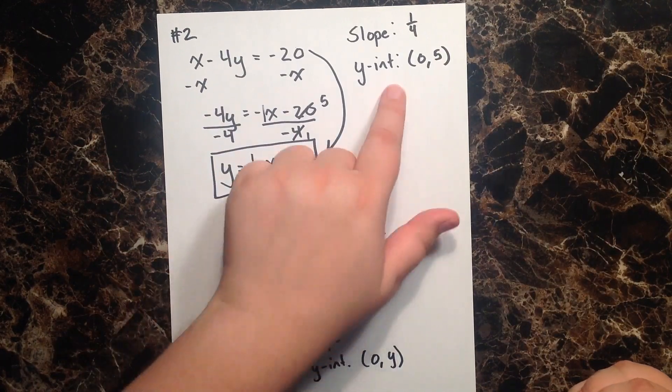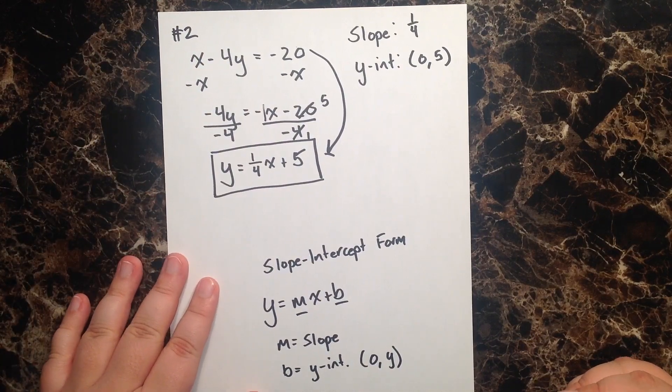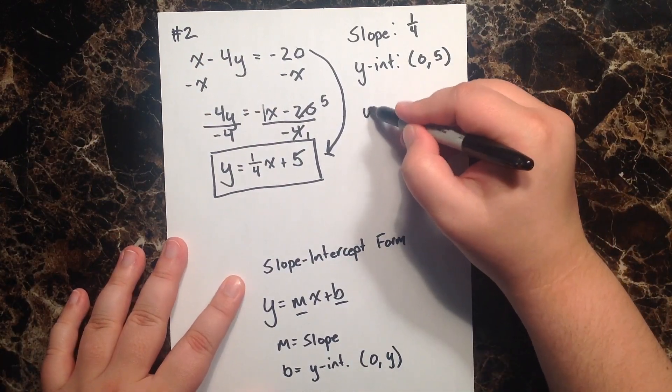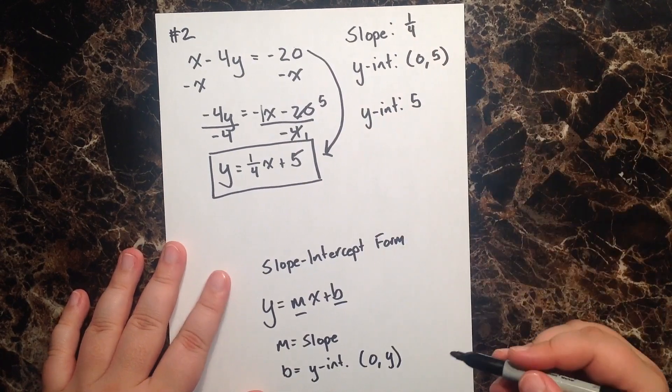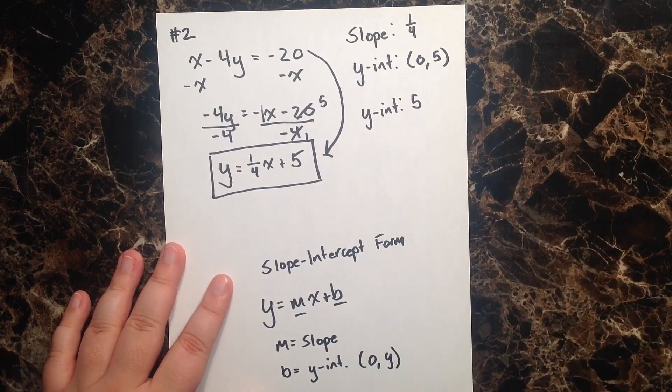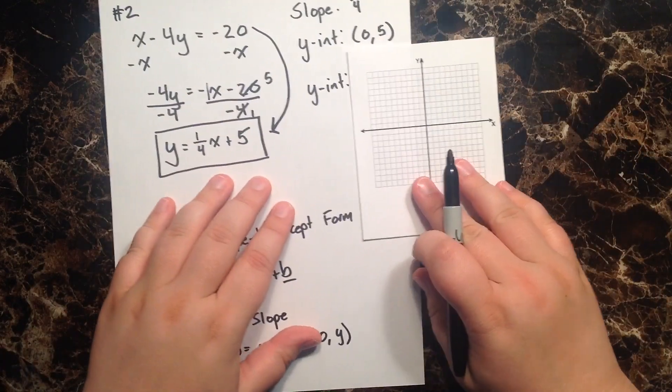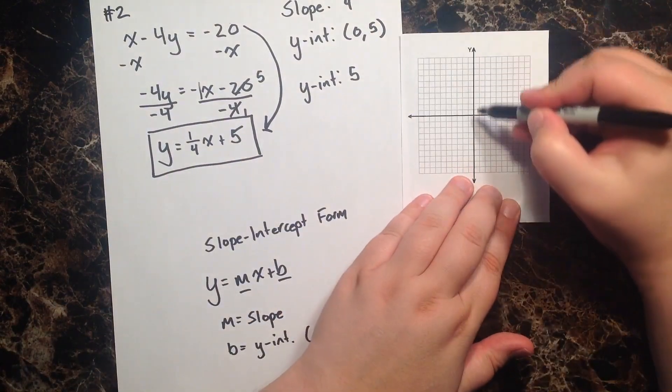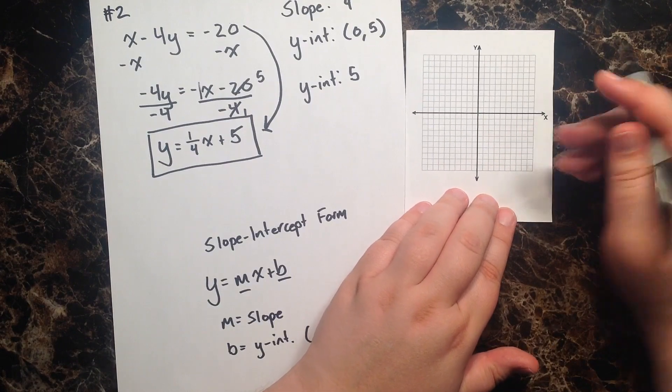Now, let's talk about intercepts for just a second, and actually all points in general. Some people might be tempted to say that my y-intercept is just 5. Well, no, it's not, because an intercept is an actual point on a grid, and so there's no such thing as a point with just one coordinate.